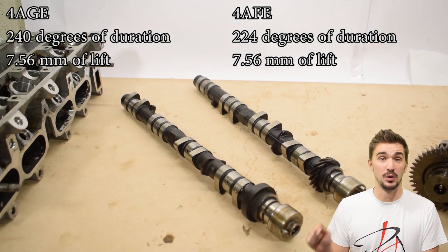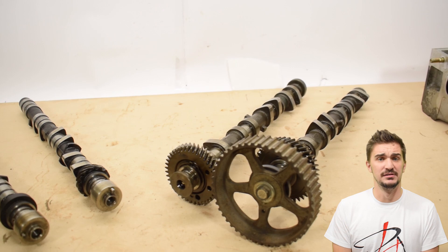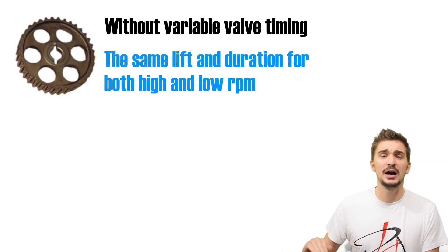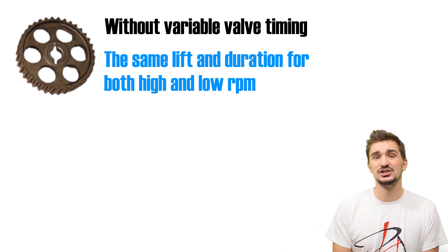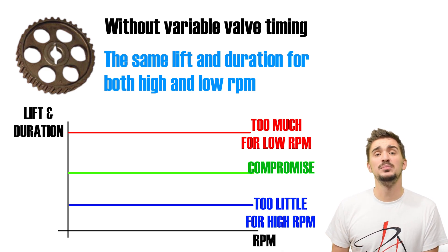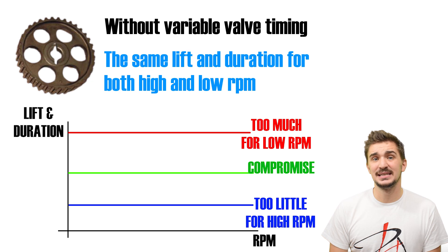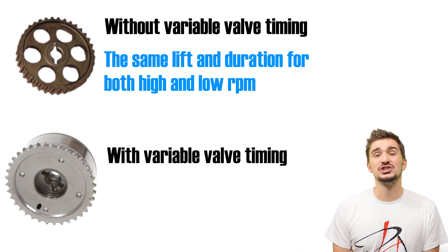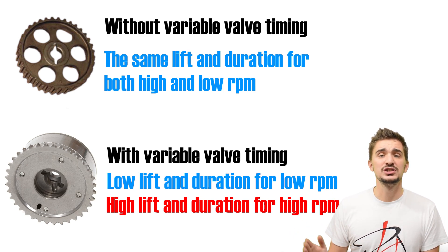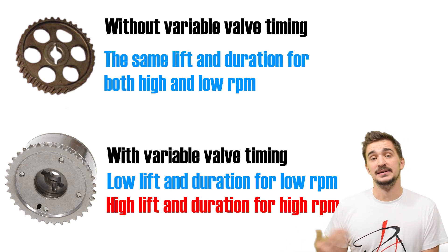Another reason behind the modest cam specs in both of these engines is that they are pretty old designs and neither features any sort of variable valve timing. The valve lift, camshaft duration, and cam timing remain constant throughout the entire RPM range, which is why the cams in these engines must strike a balance or a compromise between low RPM and high RPM operation. Too much lift and duration would cause an unstable idle and poor performance at low RPM, while too little would rob the engine of its power potential at high RPMs. Most modern engine designs feature variable valve timing technologies that give the engine different cam profiles for different RPM ranges and engine loads — infinitely superior to a fixed valve timing system.